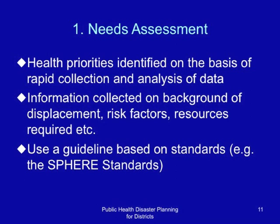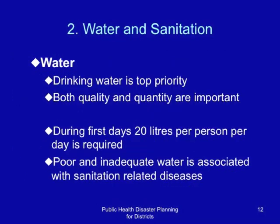Water and sanitation: drinking water is a top priority in complex emergencies. Both quality and quantity are important. During the first days, 20 liters of water per person per day should be the target. Poor and inadequate water supply is associated with sanitation-related diseases.